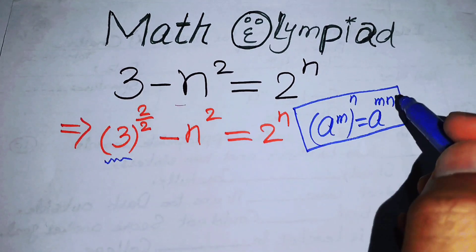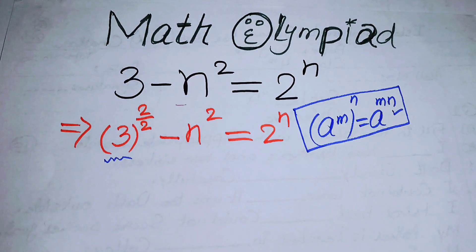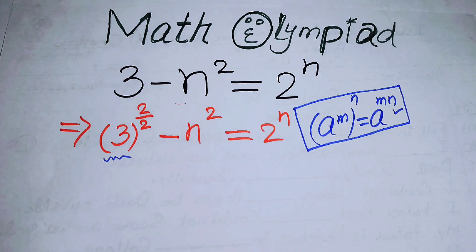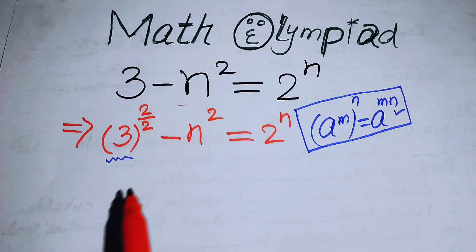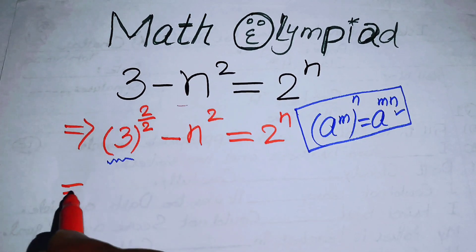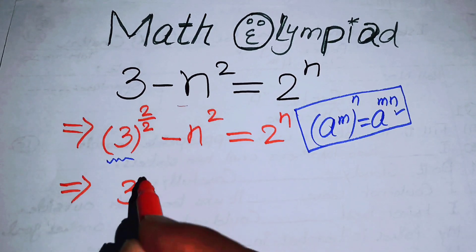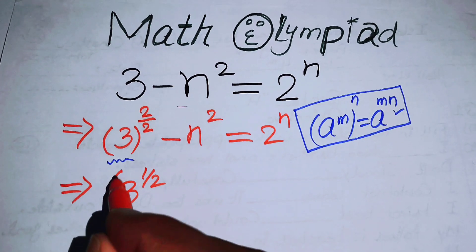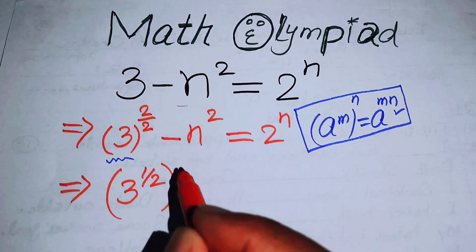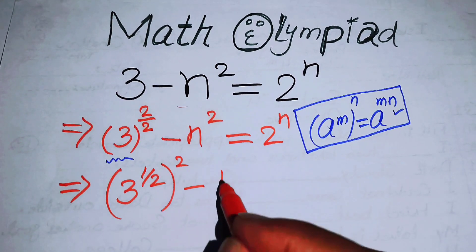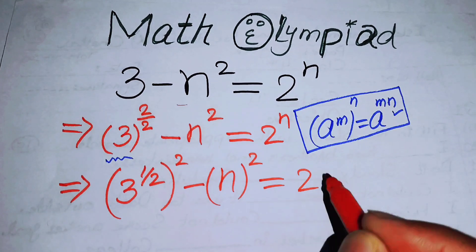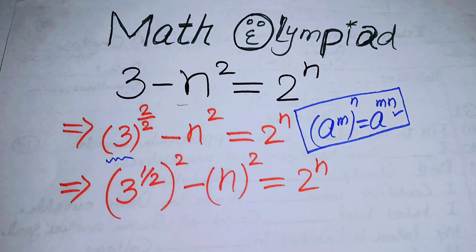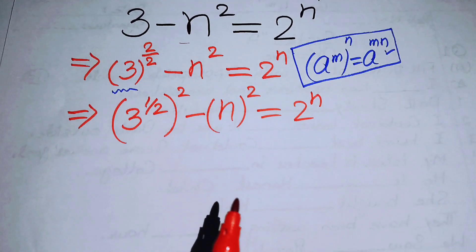Using that law, we can separate the exponents and write this equation as: 3 to the power of 1/2, whole squared, minus n squared, equals 2 to the power of n.